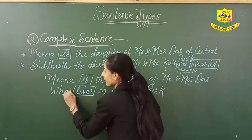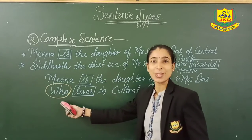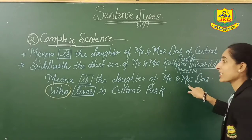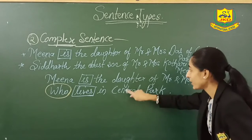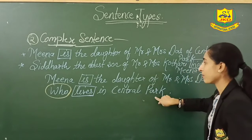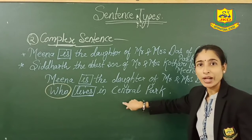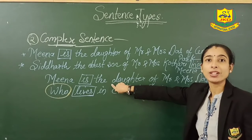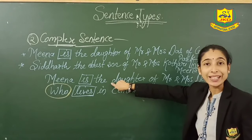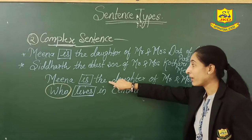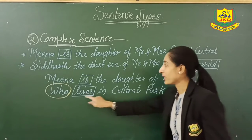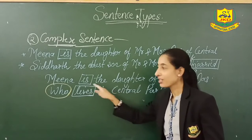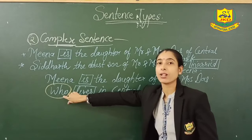And which is the subordinating clause? What do you understand? Nina is the daughter of Mr. and Mrs. Das — this sentence is almost complete. But when you see the second part, does it complete the sentence on its own? No. It is dependent on the main clause, on the independent clause, on the principal clause. That is why it is the subordinating clause — a subordinating conjunction is used to join both clauses.